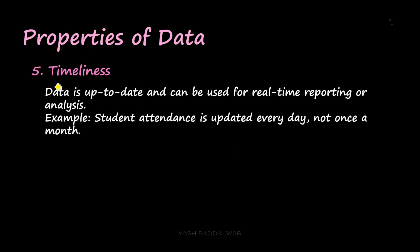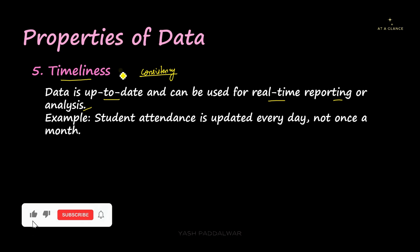Now let's move on to the fifth property of data, that is timeliness. Data must be up to date and it can be used for real-time reporting or analysis. So whenever this property comes, we must remember one particular word, that is consistency. Data has to be consistent throughout the database. The data has to be consistent everywhere. Whenever we are talking about multiple databases also, in every single database, whenever we talk about a particular record that has to be consistent, that has to be up to date in all the databases. And also this timeliness property ensures that the data is going to be used for real-time reporting or analysis too.